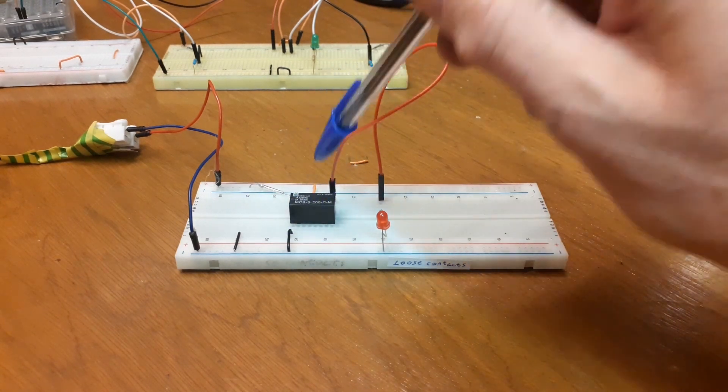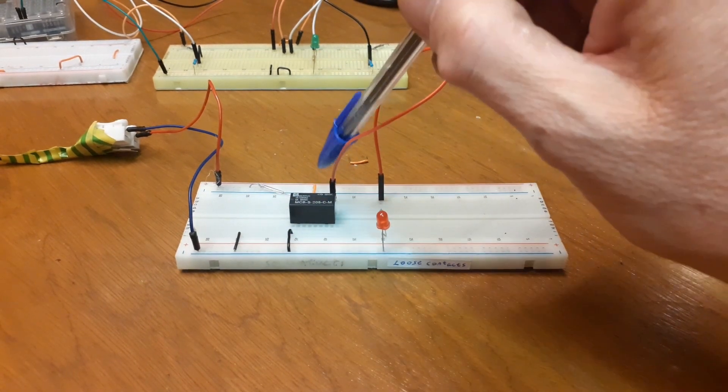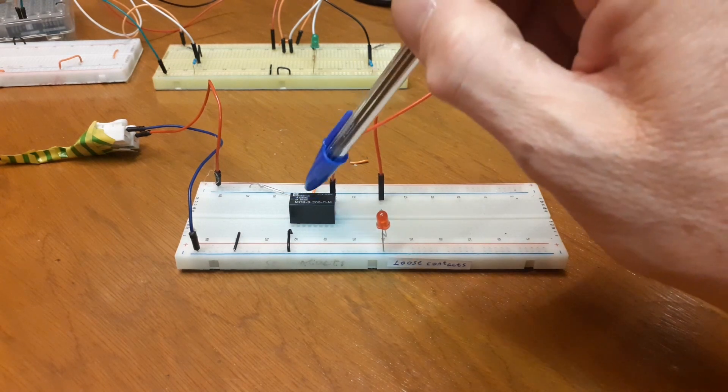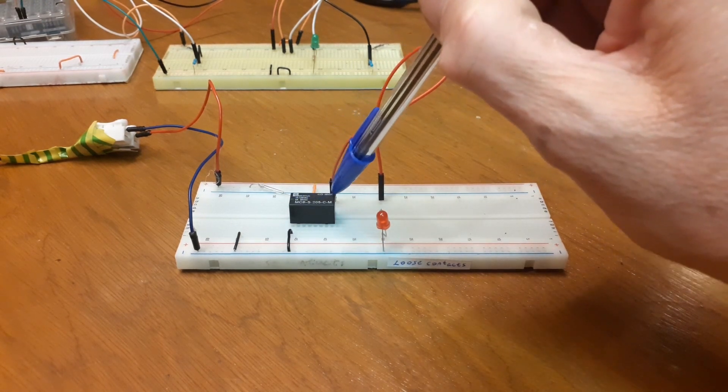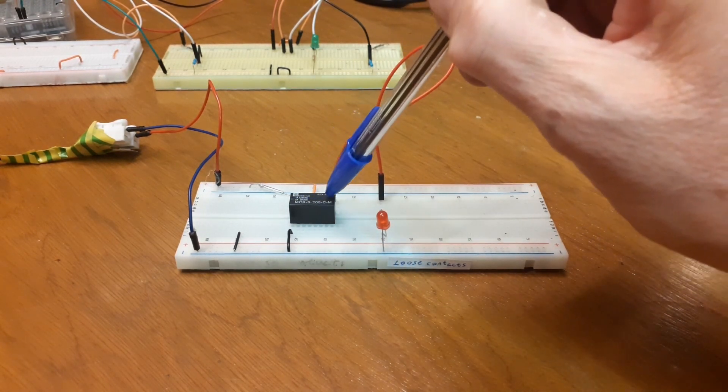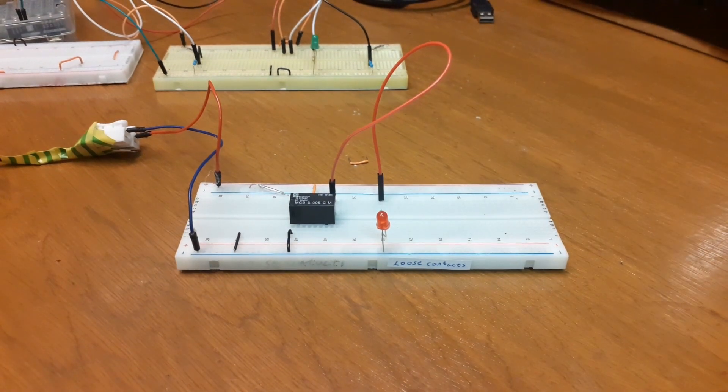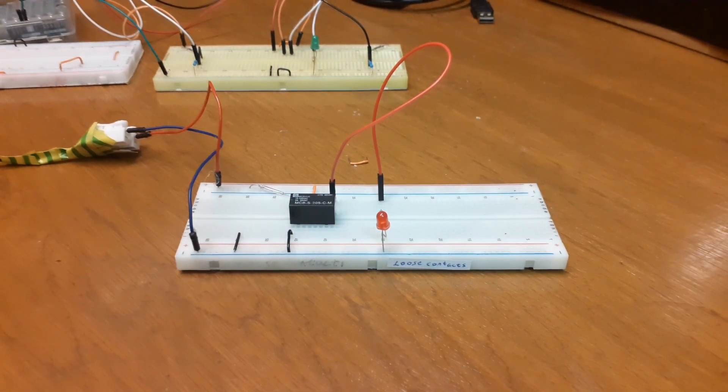Through the reed switch, this is connected to common normally open. When we activate the coil it switches to common normally open and allows current to pass through the LED. So why would you use a relay?